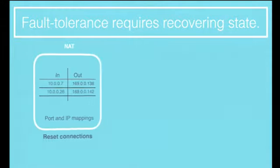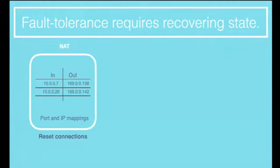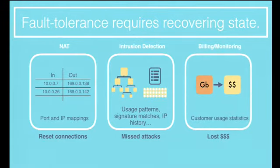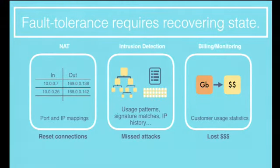First, state. Most middlebox applications maintain state about ongoing connections. For example, a network address translator keeps a mapping of private and public addresses — if this data is lost, connections are reset and users complain. If I have a security appliance like an intrusion detection system, the device keeps records of user behaviors, protocols they use, and messages they've sent in the past — if all this goes missing, attacks may sneak by undetected. And my ISP keeps records of my usage behaviors to bill me at the end of the month — if this data goes missing, I will be very happy, but my ISP will not. The key takeaway is that each class of device has its own kind of state, with different failure modes if data goes missing during recovery.